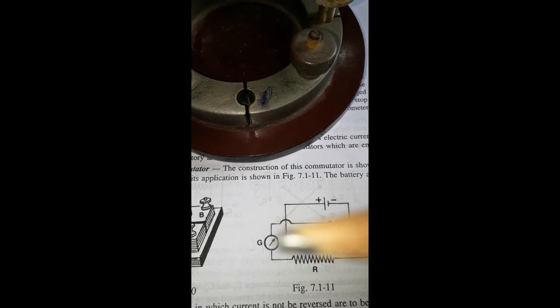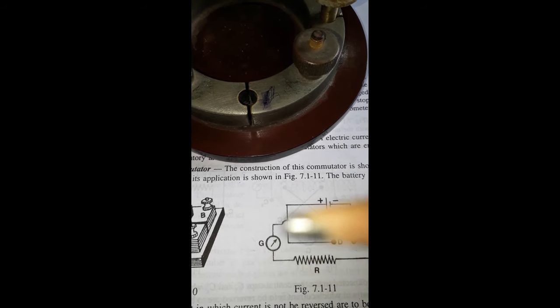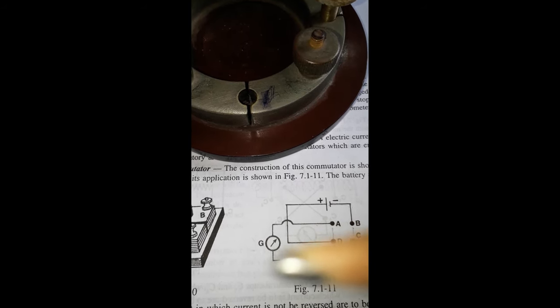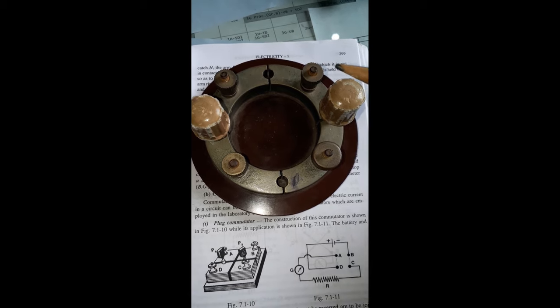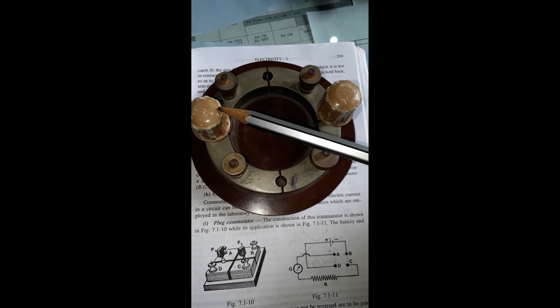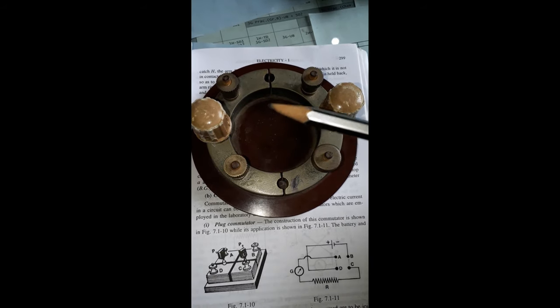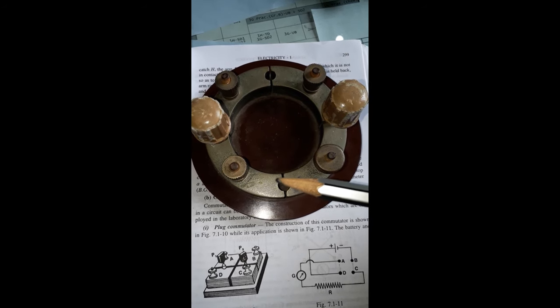The direction is changed from lower side to upper side, so direction is reversed. In this way, a plug commutator changes the direction by changing the position of the connecting keys from this pair to this pair.